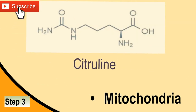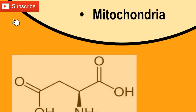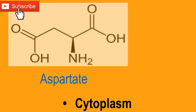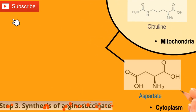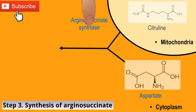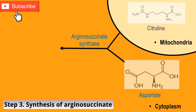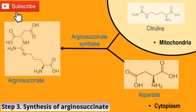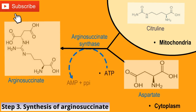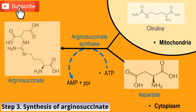In step 3, citrulline condenses with aspartate in the presence of arginosuccinate synthase to produce arginosuccinate. This step requires ATP, which is cleaved to AMP and pyrophosphate. The second amino group of urea is incorporated in this reaction only.